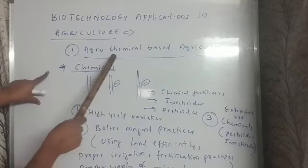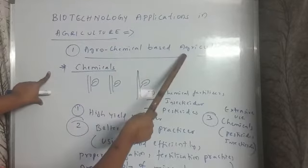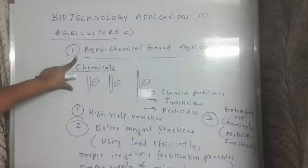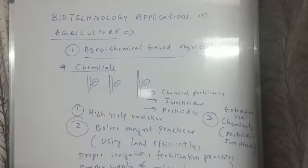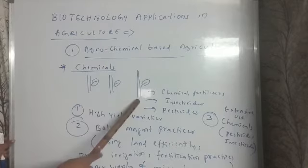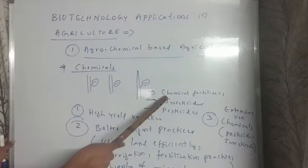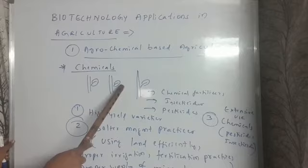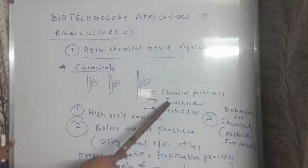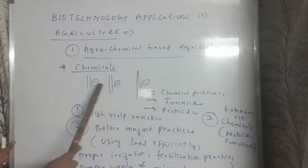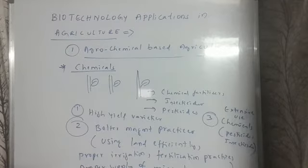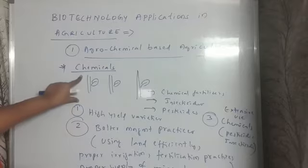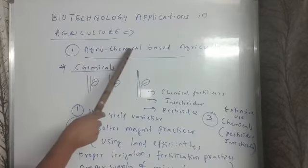First, let's understand agrochemical based agriculture. In this method, we use chemicals to grow crops. To increase the fertility of the soil, we are using chemical fertilizers. To kill the insects, to protect the crop from the insects, we are using insecticides. To protect the crop from pests, we are using pesticides. So overall, we are growing the plants by using chemicals. Such kind of agriculture is known as agrochemical based agriculture.